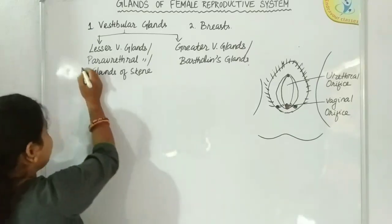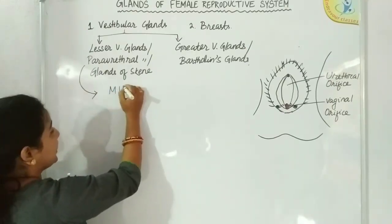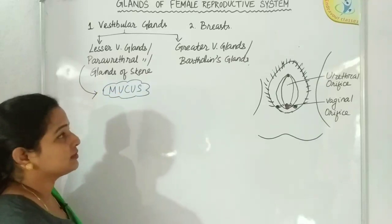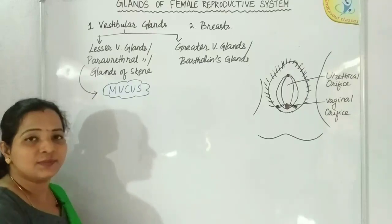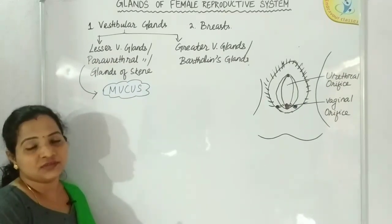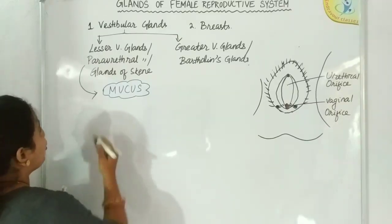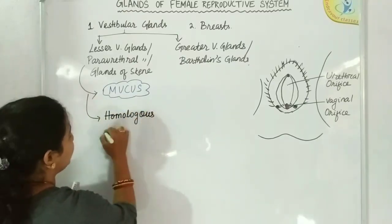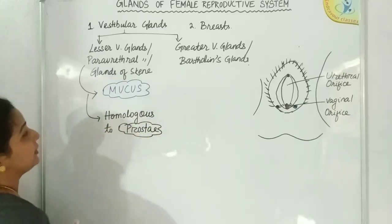The exact function of the mucus secreted by the lesser vestibular glands is still unknown. However, it is believed that the mucus secreted into the urethral opening decreases the possibility of microbial entry into the urethra. The lesser vestibular glands are homologous to the male prostate.